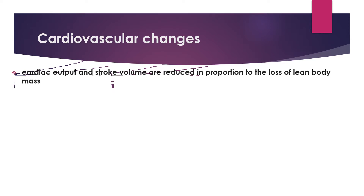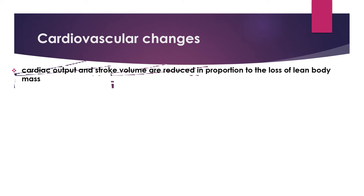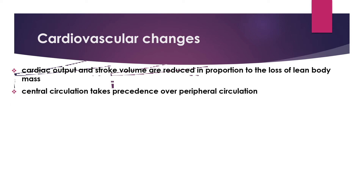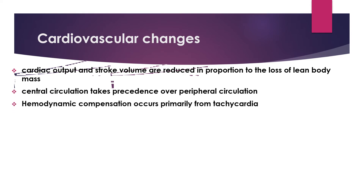Regarding cardiovascular changes, severe acute malnutrition causes cardiac output and stroke volume to be reduced in proportion to the loss of lean body mass. Central circulation takes precedence over peripheral circulation, and hemodynamic compensation occurs primarily through tachycardia. Therefore, severe acute malnutrition patients are at risk of heart failure if there is fluid overload.